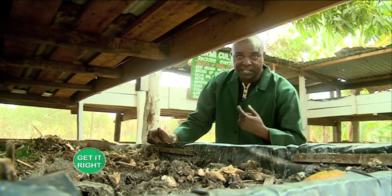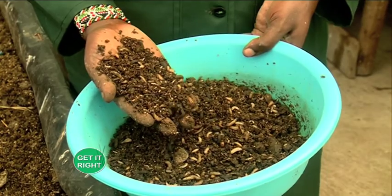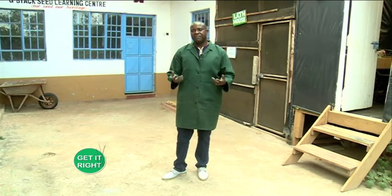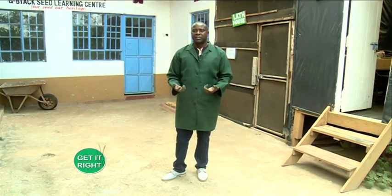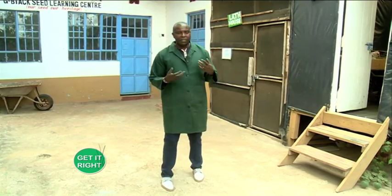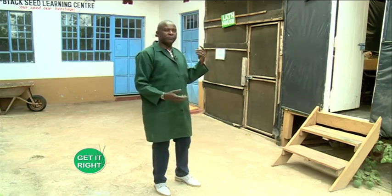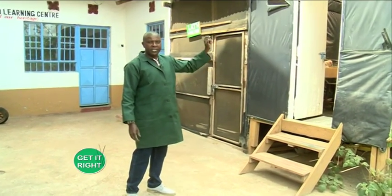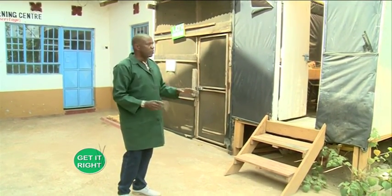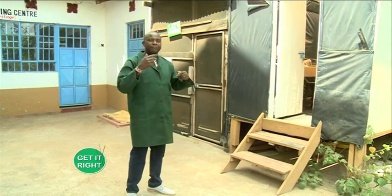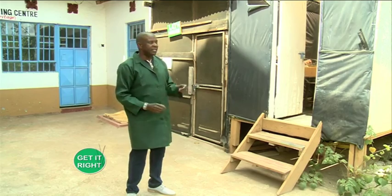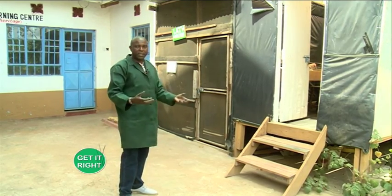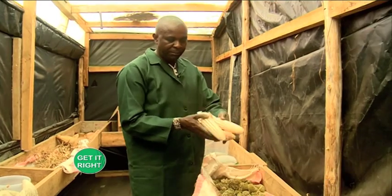This is our seed learning center, where we teach farmers how to save their own indigenous heirloom varieties so they have seeds all year round. The process of seed saving starts from the dehydrator, where we dehydrate seeds slowly without direct sunlight. The seeds that qualify are then taken to the seed bank, where we store them for planting in the next seasons.